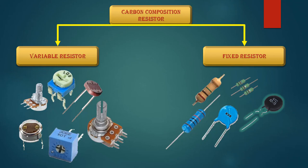When any change is needed in a fixed resistor in our circuit, we need to remove that resistor from the circuit. While a variable resistor does not need to be removed — we simply change the value of that resistor. The variable resistor has different types.